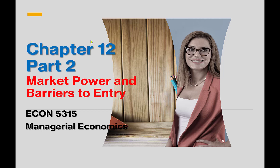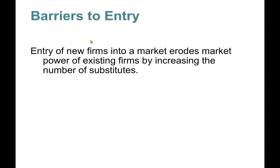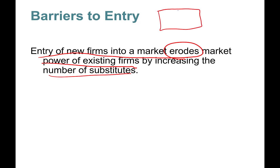Hello everyone, this is Chapter 12 Part 2. In this part we'll talk about market power and barriers to entry. Entry of new firms into a market erodes the market power of existing firms by increasing the number of substitutes. For example, if you're in the restaurant industry in a small city...